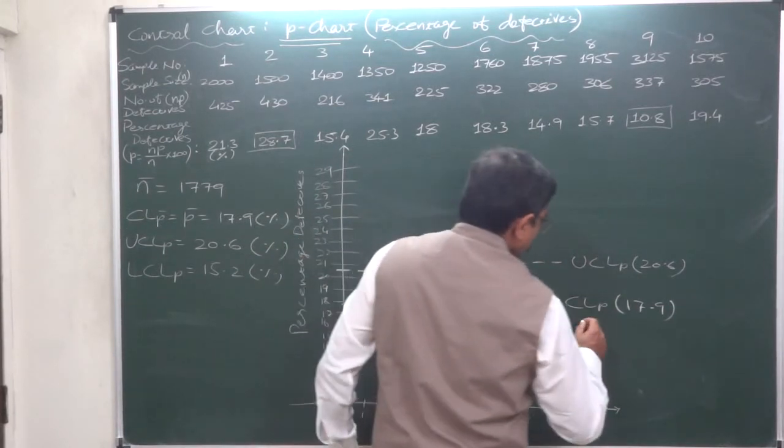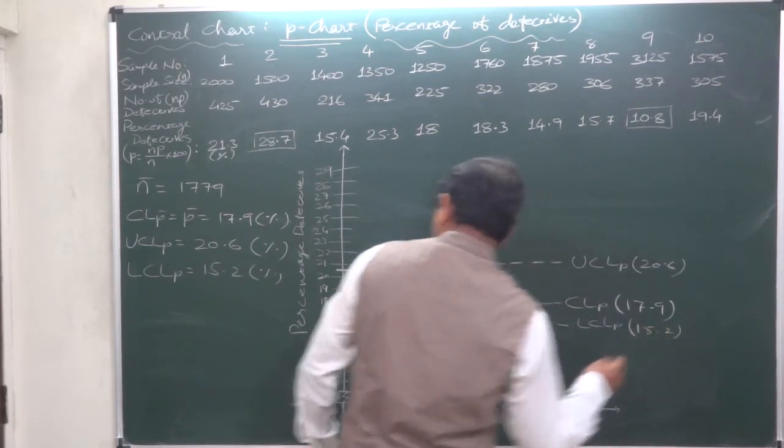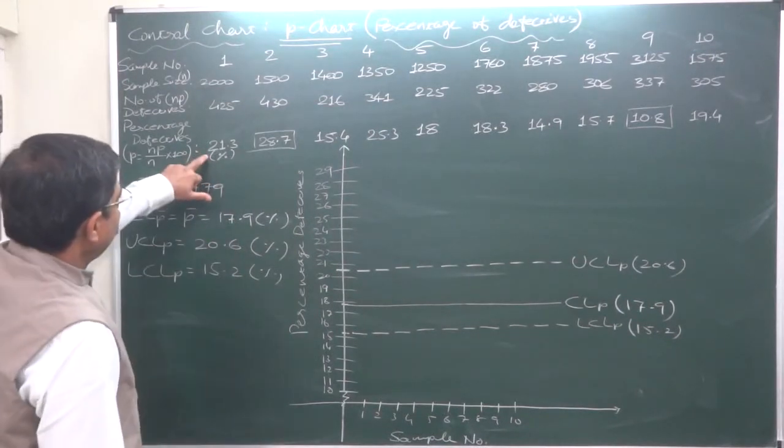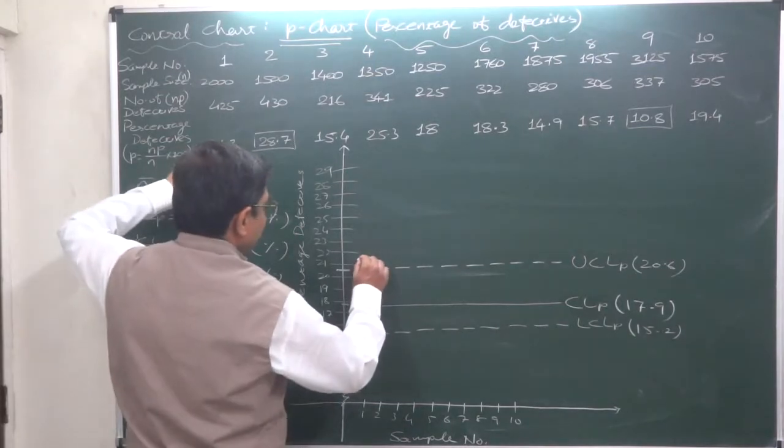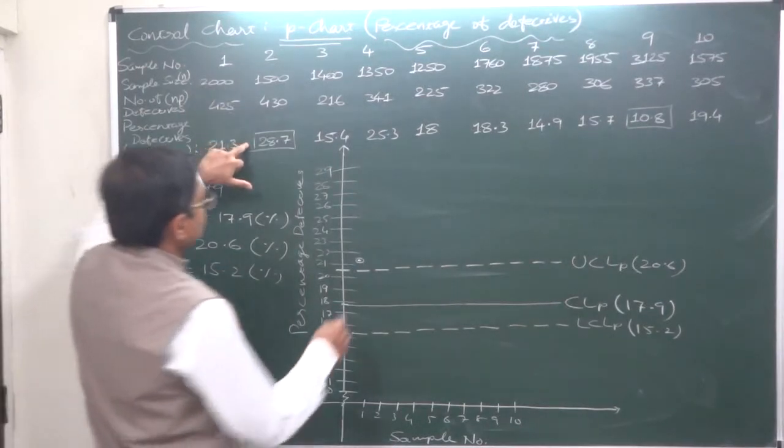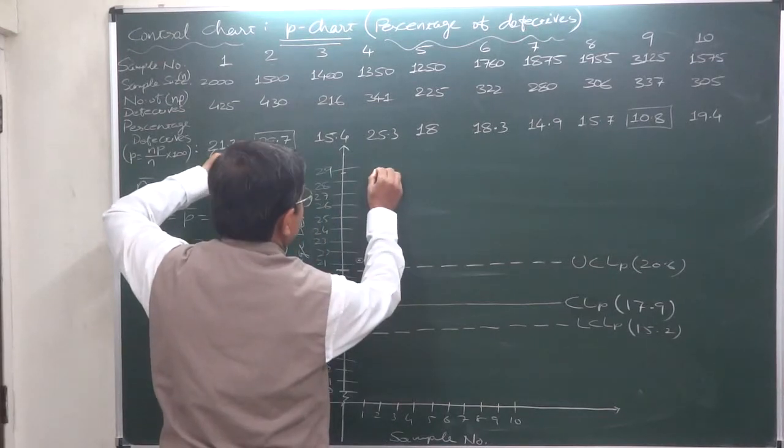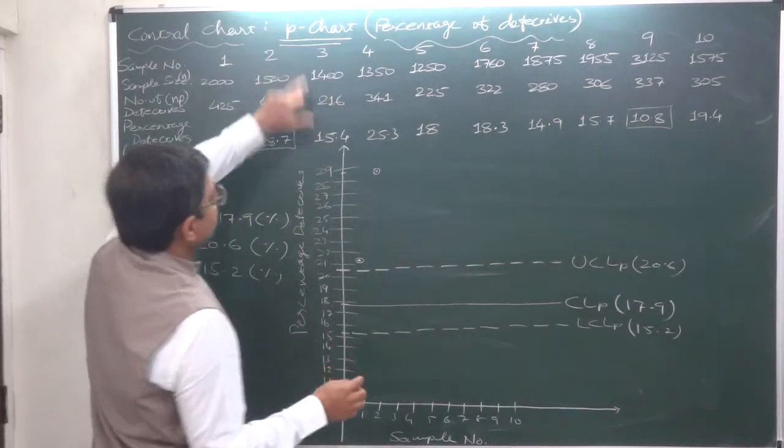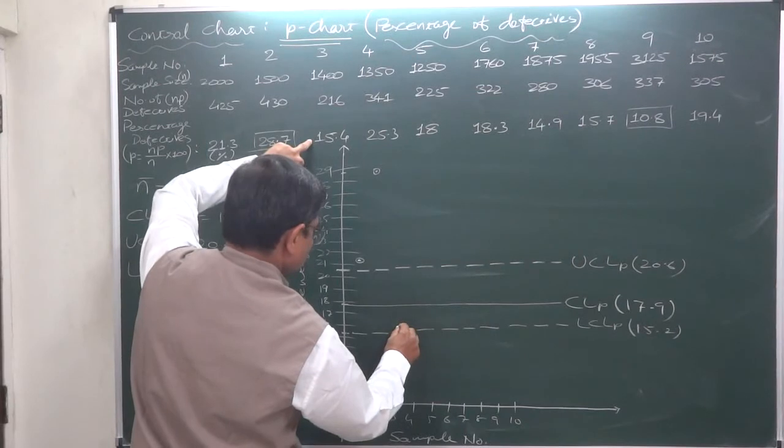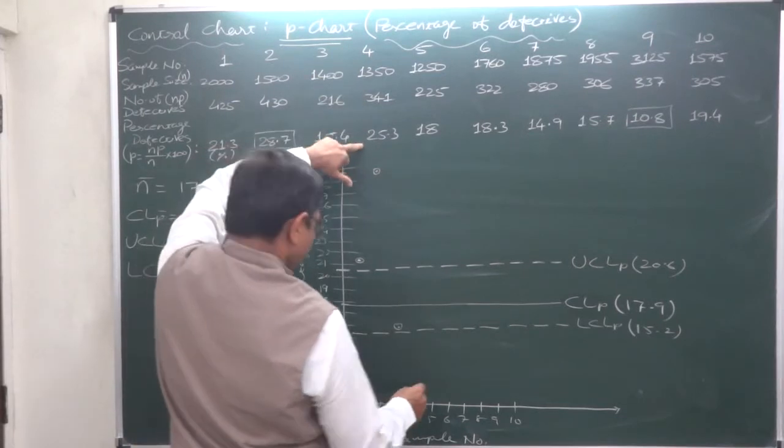Now sample number one has 21.3%, three millimeters above 21. Sample number two has 28.7. Sample number three has 15.4. Sample number four has 25.3, three millimeters above 25.